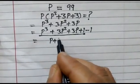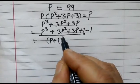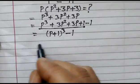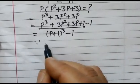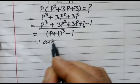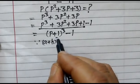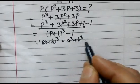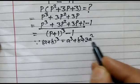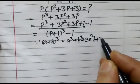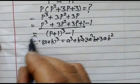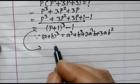...to (P + 1)³ - 1, because as we know (a + b)³ is equal to a³ + b³ + 3a²b + 3ab². So now we...